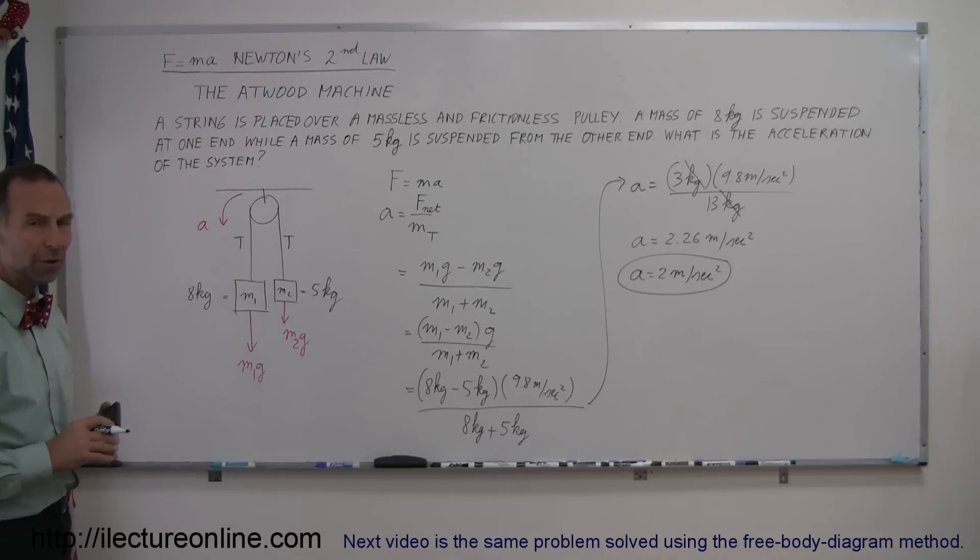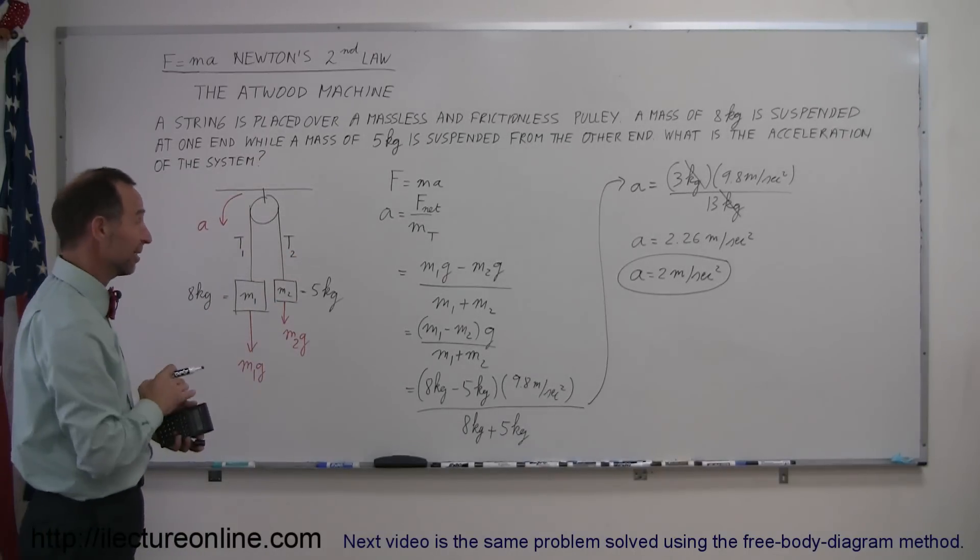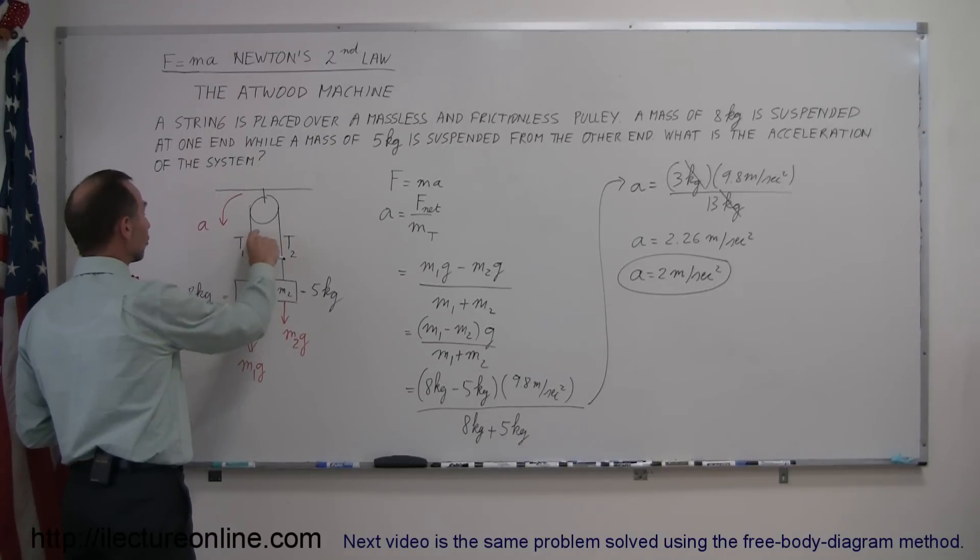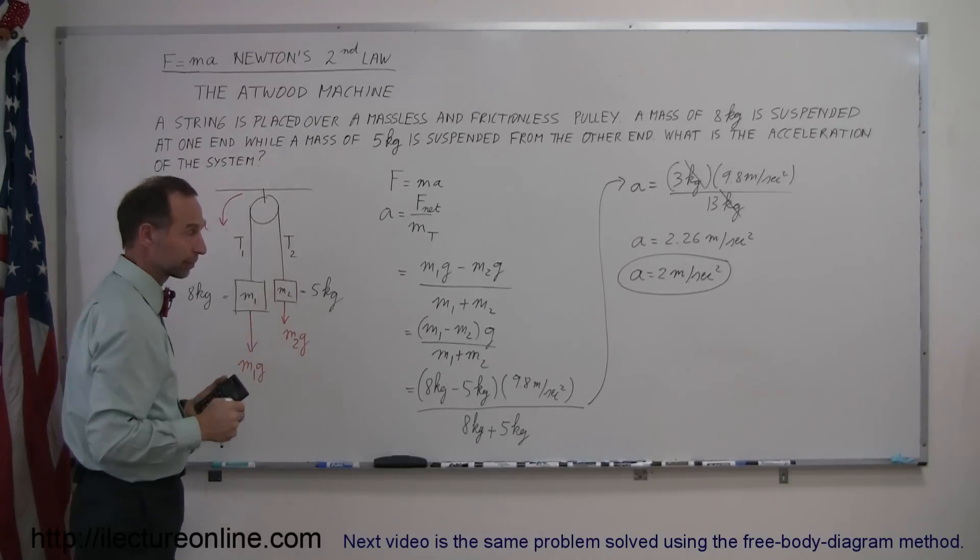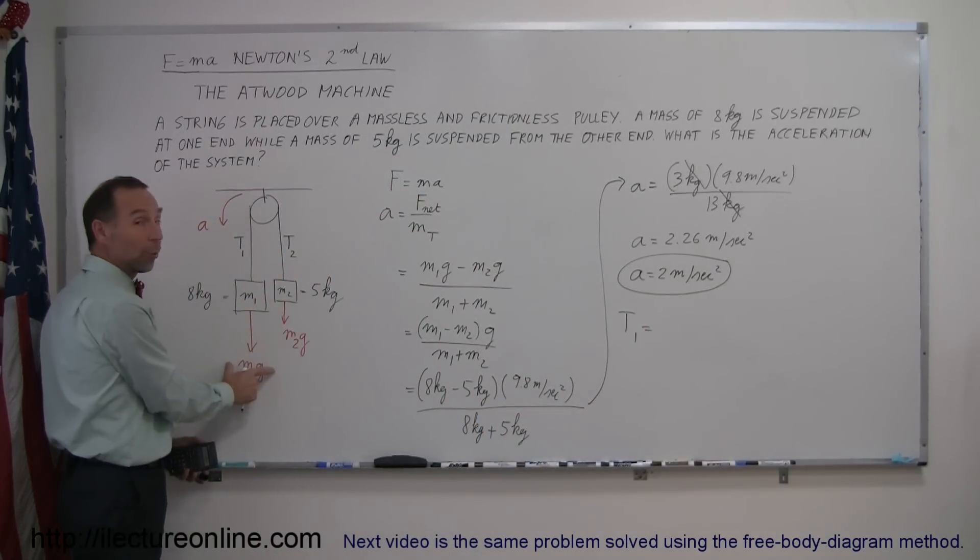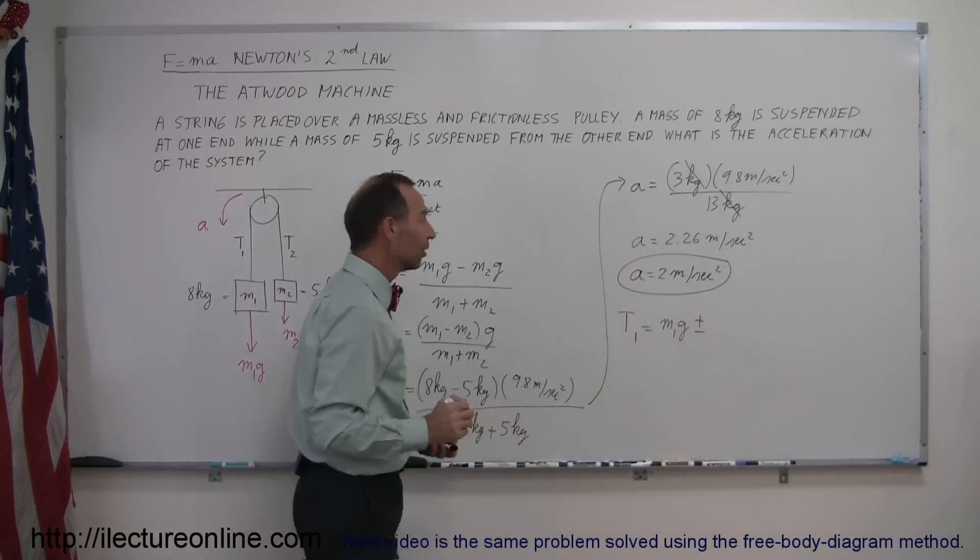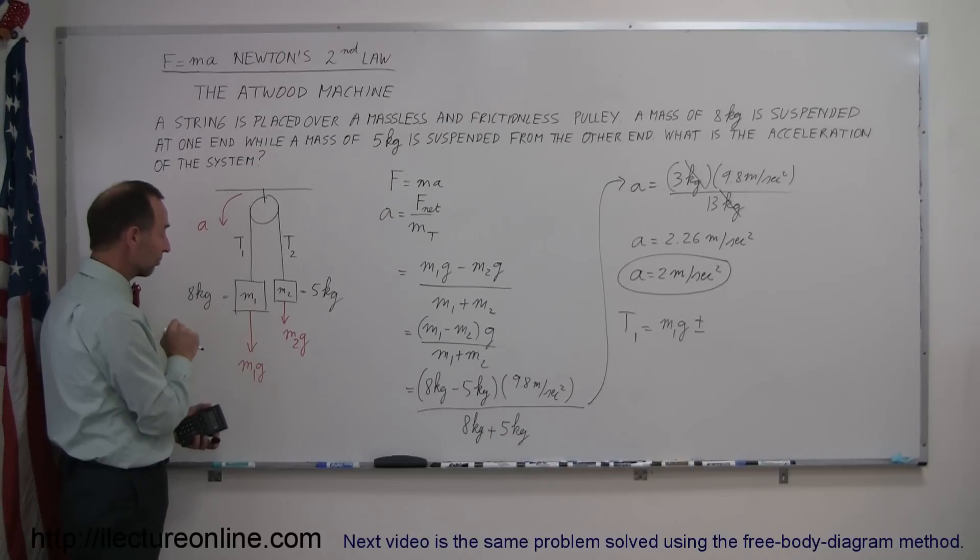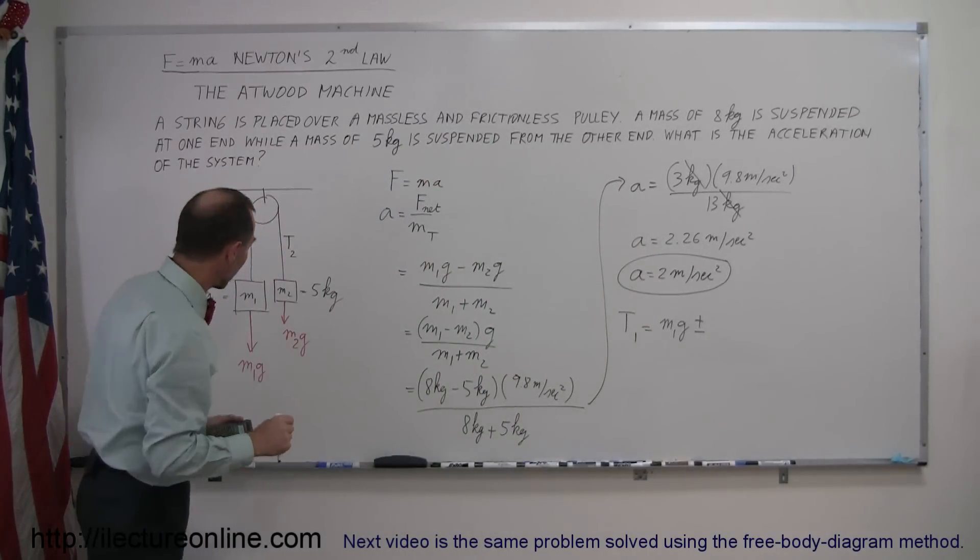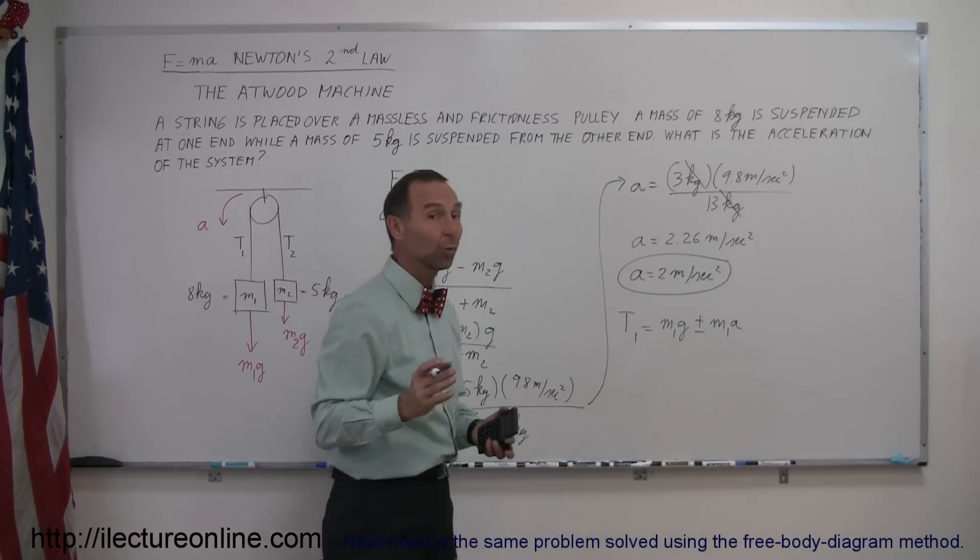One more thing. What if we wanted to calculate the tension in the string? And so let's call this tension 1 and tension 2, assuming for a moment that they're not the same, although we already know that they're supposed to be the same. Since tension 1 is a string that's attached to the mass that's accelerating downward, we can say that tension 1 is equal to the weight that it must hold up, which is the weight of the object, mg, in this case m1g, and then it would be plus or minus the force required to accelerate this mass. And so the force to accelerate the mass at acceleration of a equals 2, or 2.26 meters per second squared, it would be the mass times acceleration, so it would be m1g plus or minus m1a. Which way is it? Is it plus or is it minus?